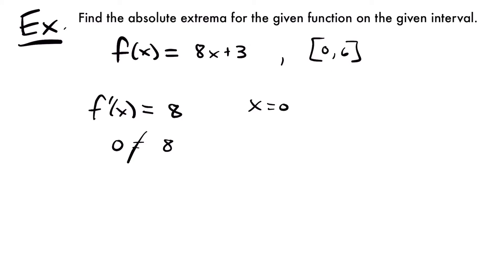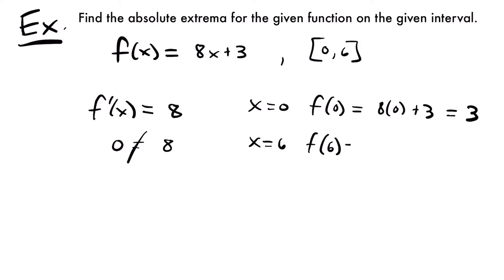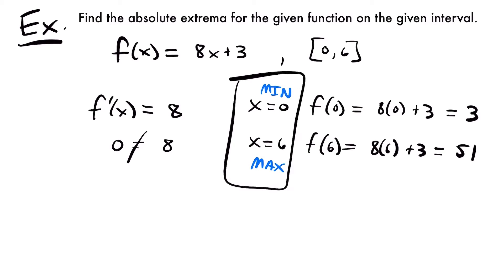For x equals 0, f of 0 is equal to 8 times 0 plus 3, which equals 3. And then for our other endpoint, x equals 6, f of 6 is equal to 8 times 6 plus 3, that's 48 plus 3, so we get 51. Comparing our y values, 51 is a lot bigger than 3, so x equals 6 is our maximum, and x equals 0 is our minimum. That is the answer to this question.